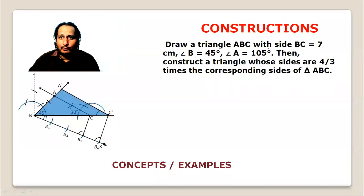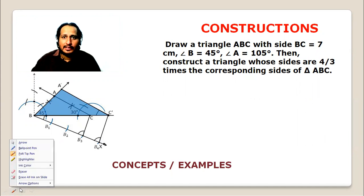Draw triangle ABC with side BC = 7 cm, angle B = 45°, angle A = 105°. Then construct a triangle whose sides are 4/3 times the corresponding sides of triangle ABC.